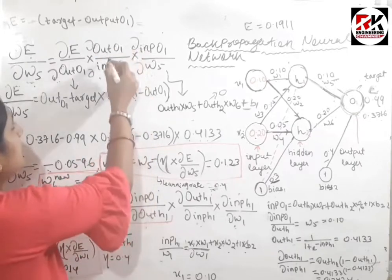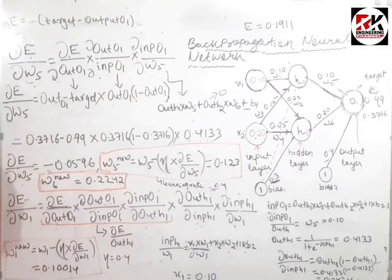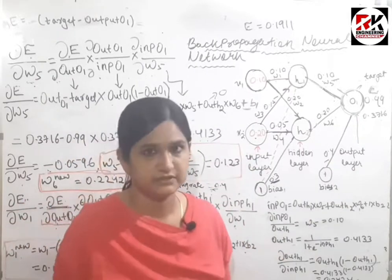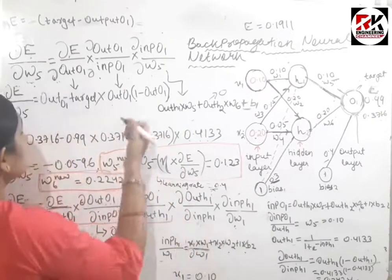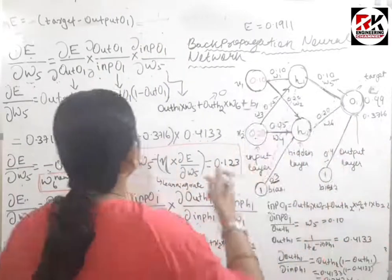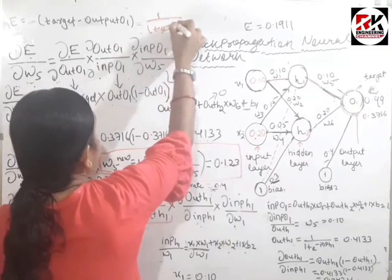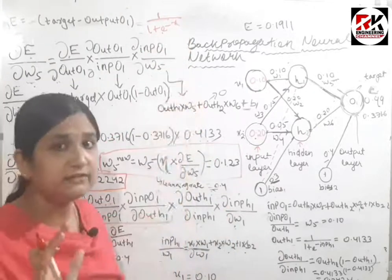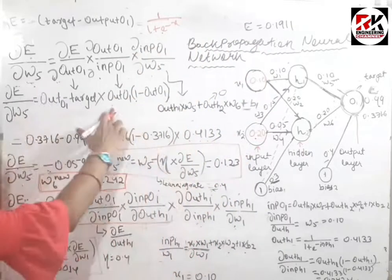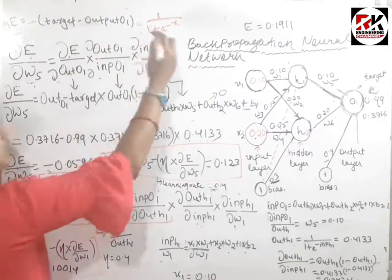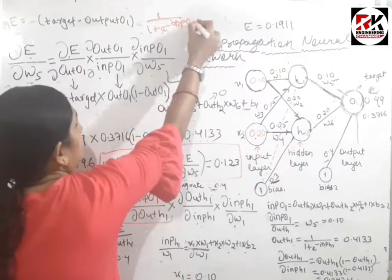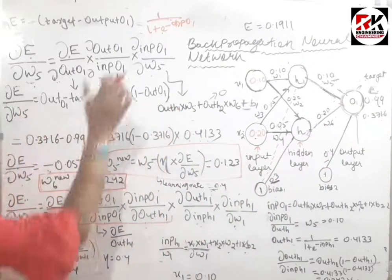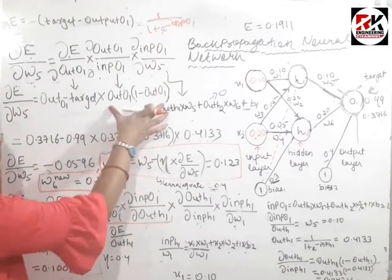Next term: derivative of output with respect to input of o1. The output of o1 is the sigmoid activation function: 1 / (1 + e^(−x)), where x is the input of o1. The partial derivative of the sigmoid function gives: output(o1) × (1 − output(o1)). So the derivative of output of o1 with respect to input of o1 is out(o1) × (1 − out(o1)).